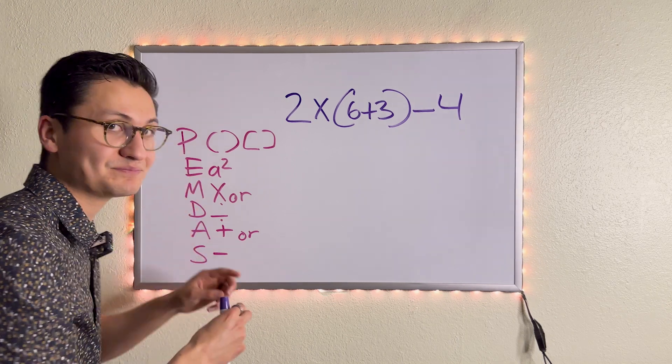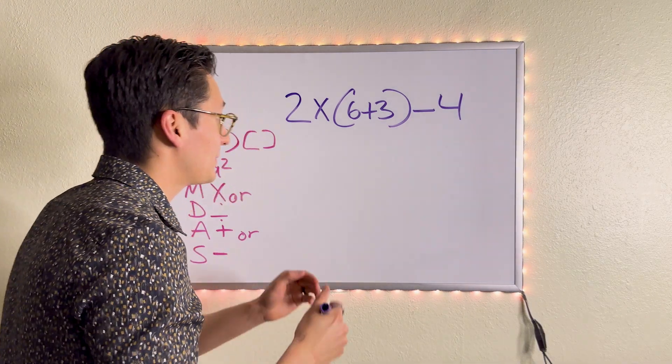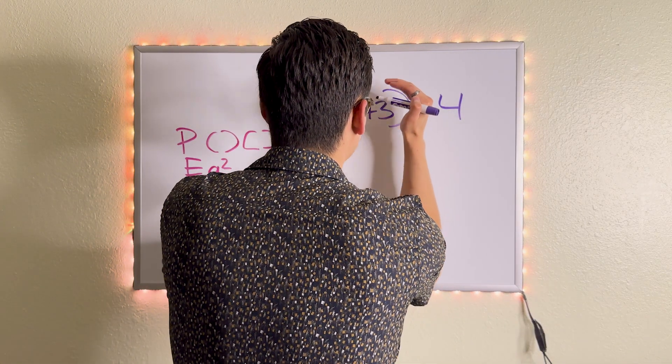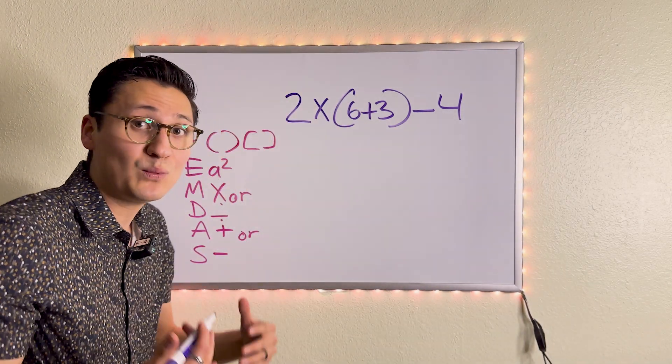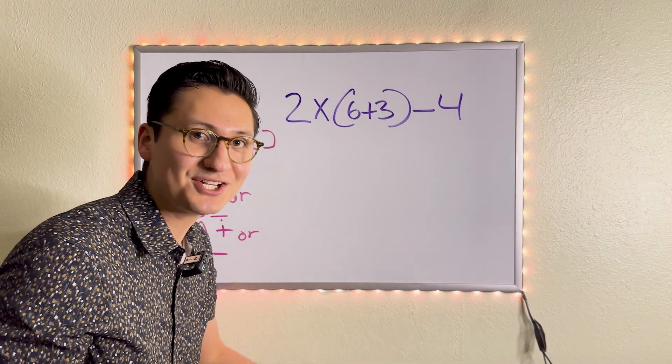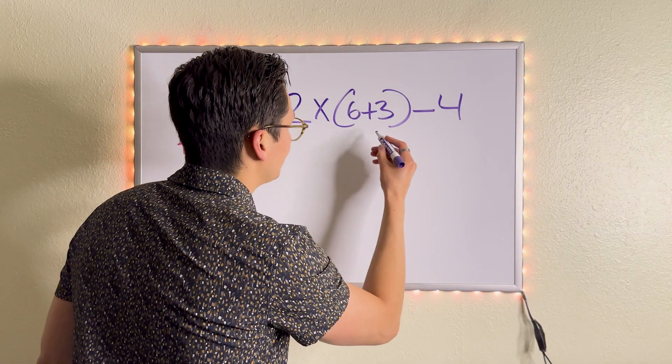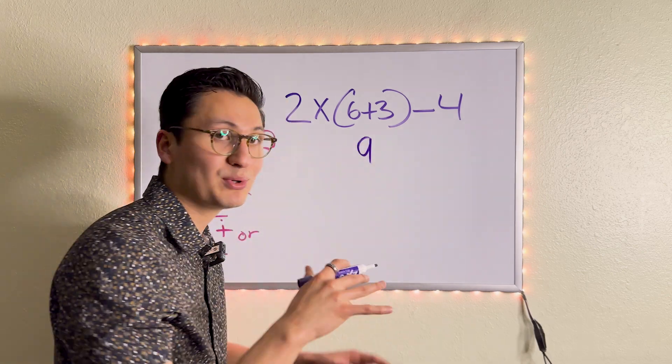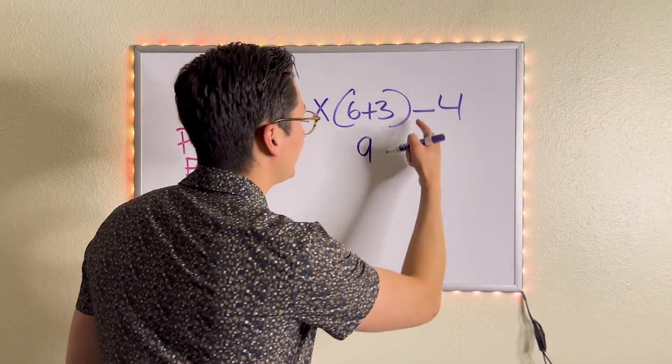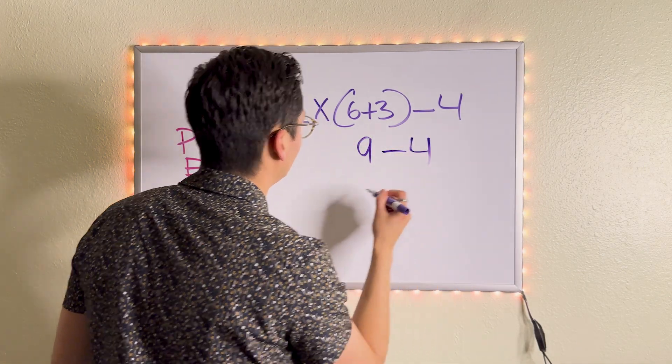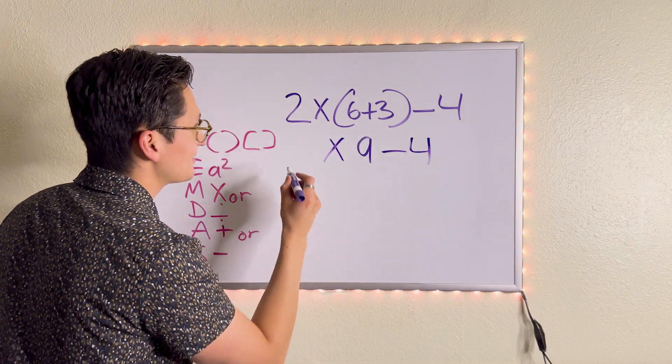So let's go. Do we have parentheses? Yes, we do. So we're going to focus only what is in the parentheses. And what is in the parentheses? Addition. So six plus three is nine. And we bring everything down. We bring the subtract down, the four, the multiplication sign, and the two.